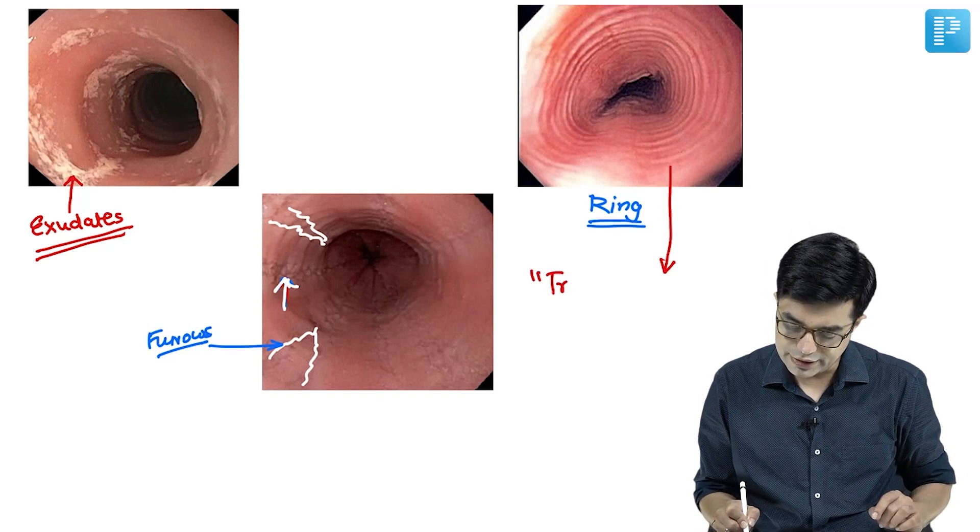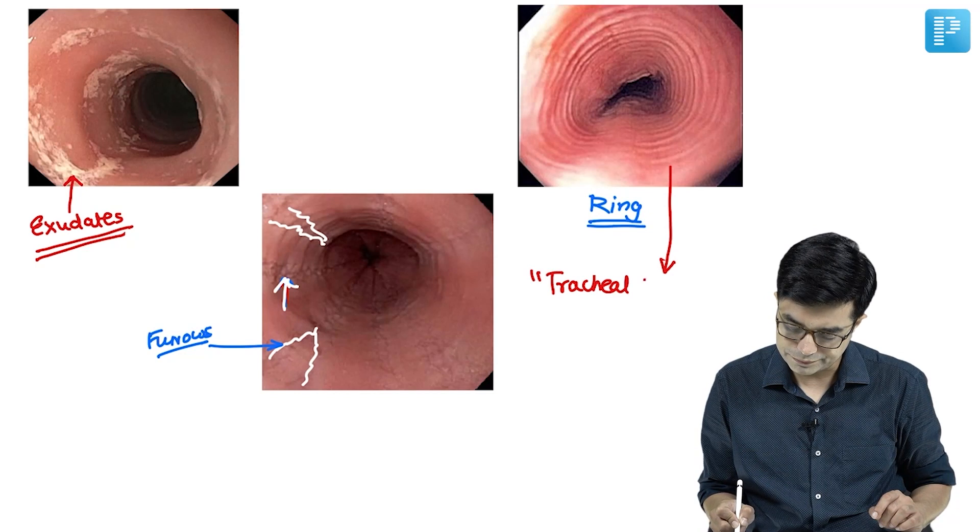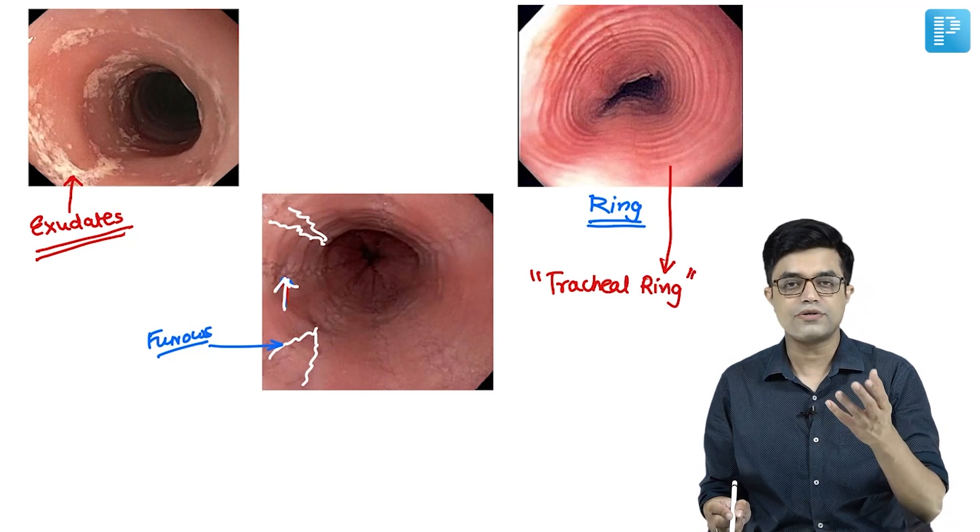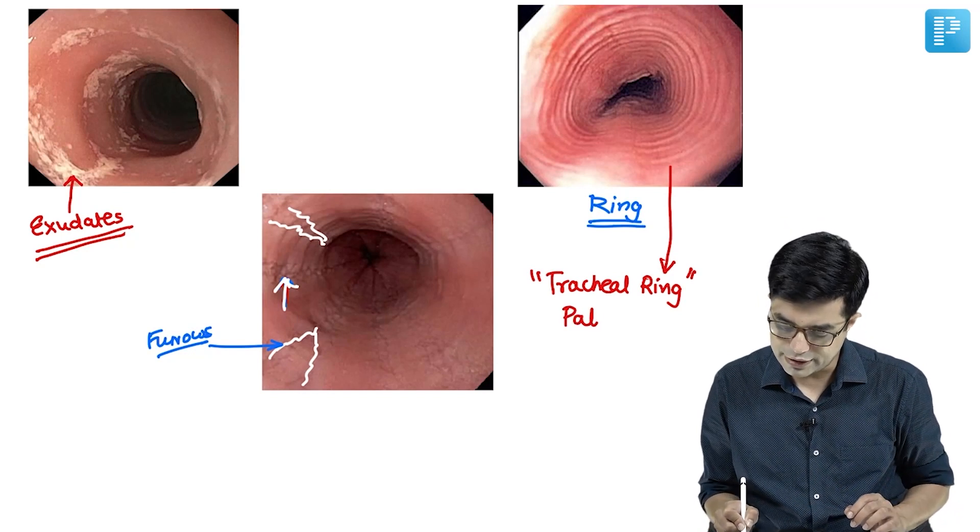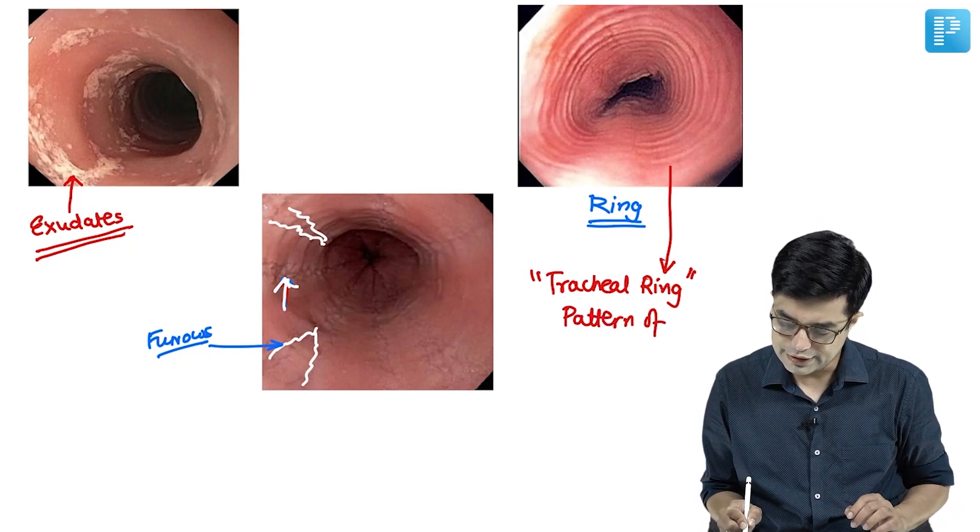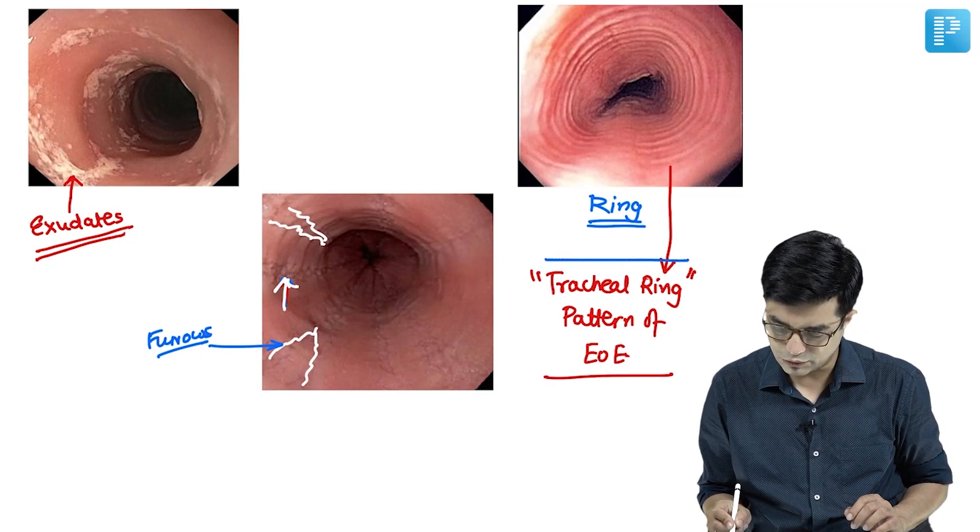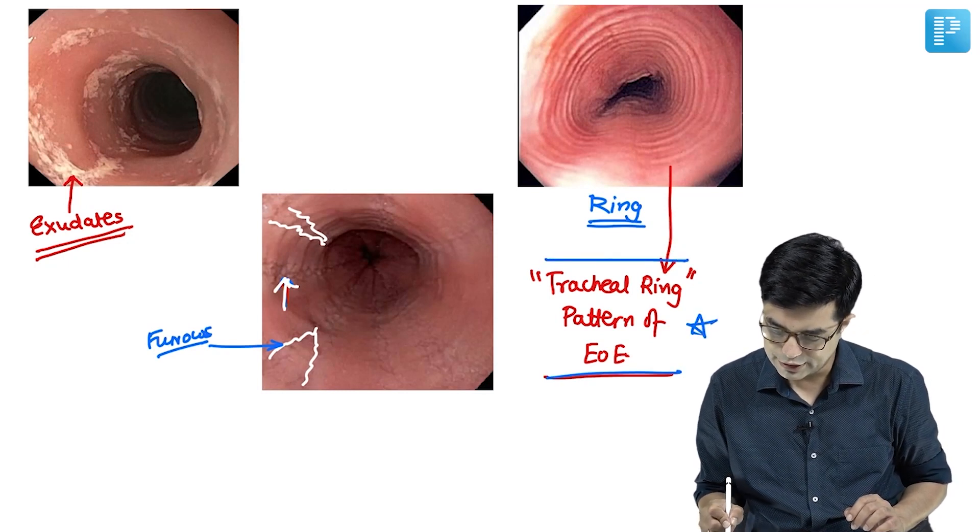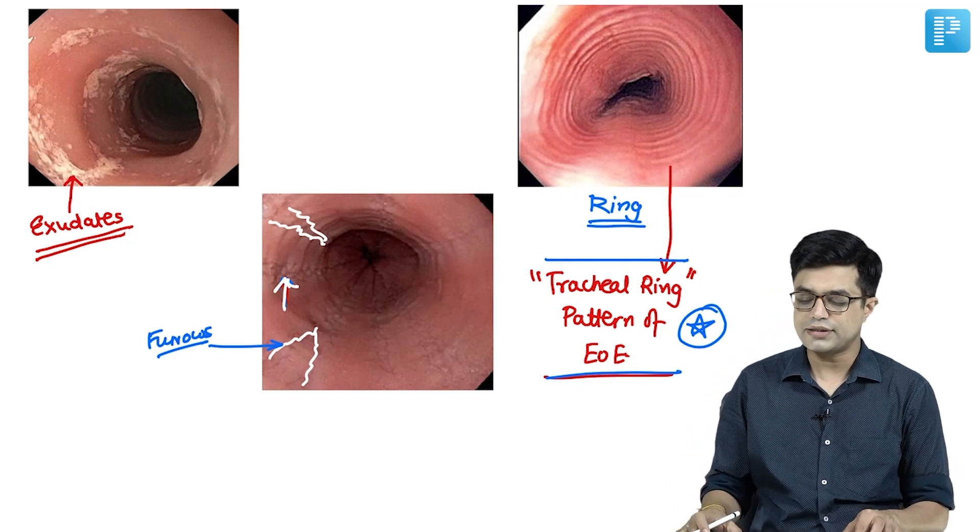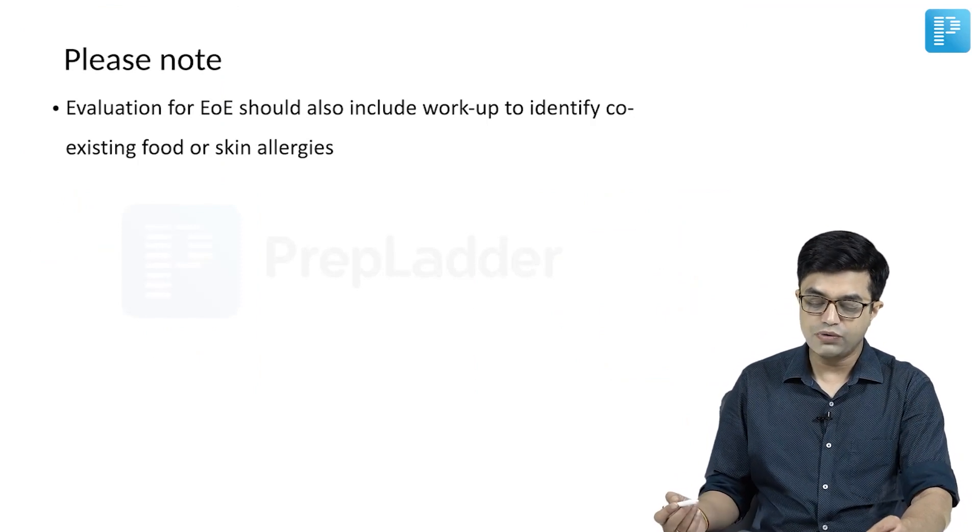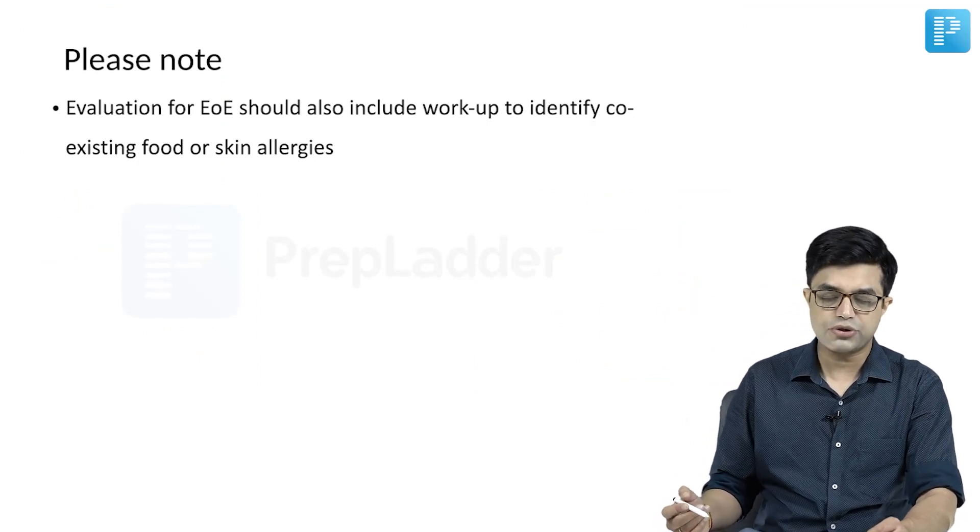Just like the trachea has rings, esophagus gives a similar appearance, called tracheal ring pattern of eosinophilic esophagitis. This wording is not in Nelson but is mentioned in other review articles and standard textbooks.